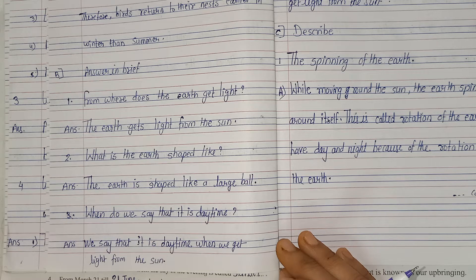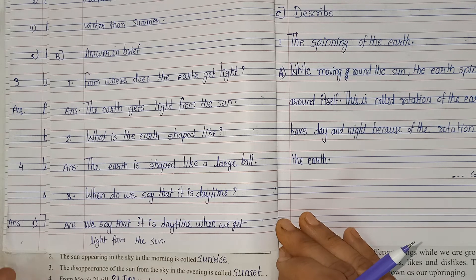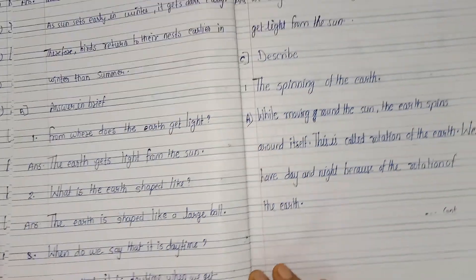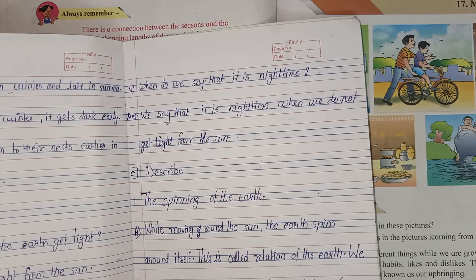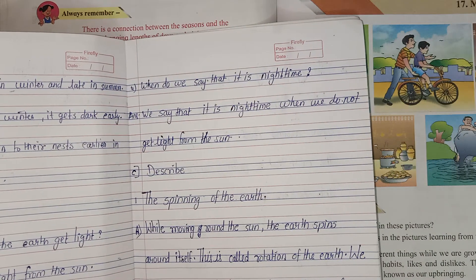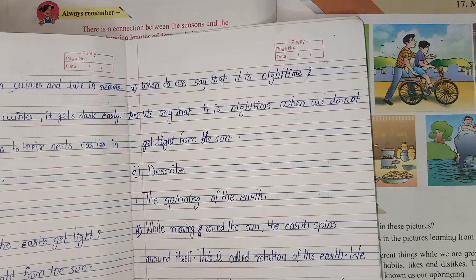Third question: when do we say that it is daytime? Answer: we say that it is daytime when we get light from the sun. Question No. 4: when do we say that it is nighttime? Answer: we say that it is nighttime when we do not get light from the sun.